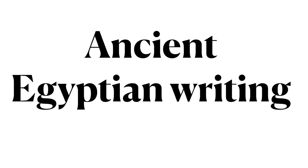This is Ling 270, Language, Technology, and Society. In this module, we are examining the question: how does writing as a form of language technology represent language? Here, we are exploring one of several writing systems — Ancient Egyptian.